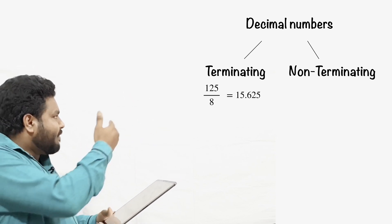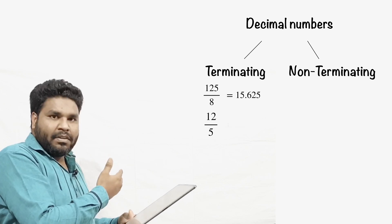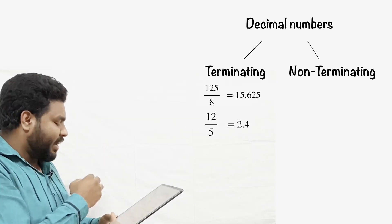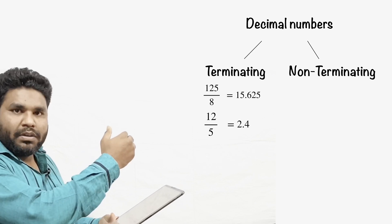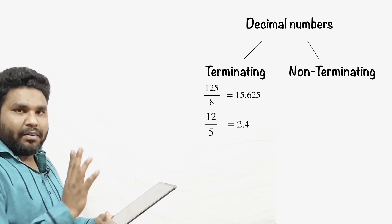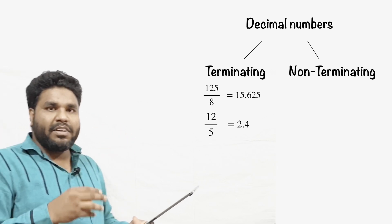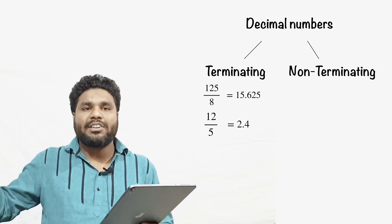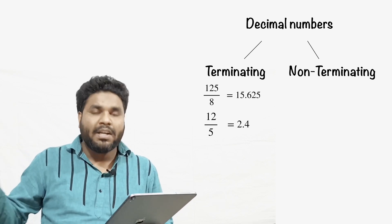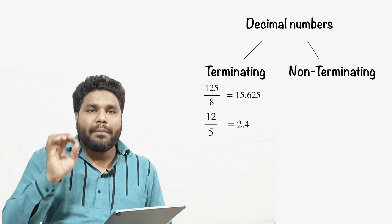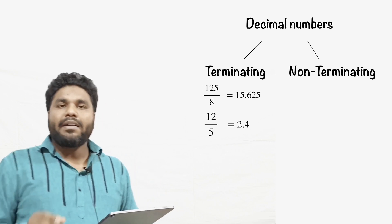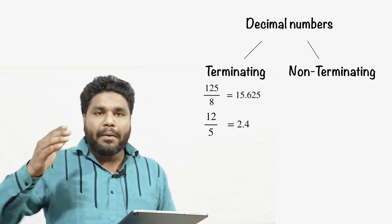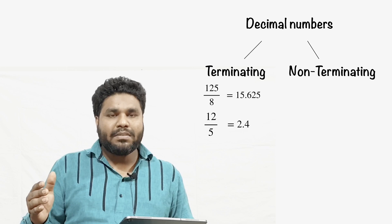Another example: 12 divided by 5 gives 2.4, and 4 is the end. Numbers which have an end after certain decimal places are called terminating decimals. Non-terminating decimals are those numbers which do not terminate — meaning they go on without ending.